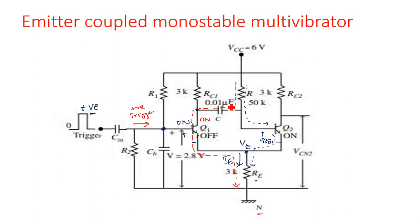Initially the capacitor does not have any charge, but now it starts charging. As long as the triggering pulse is applied, Q1 is on and Q2 is off — this is the quasi-stable state. When the triggering pulse is removed and goes to zero, the capacitor continues charging until it reaches the cut-in voltage V-gamma. When it reaches V-gamma, the states are altered again.